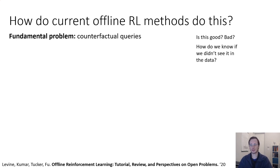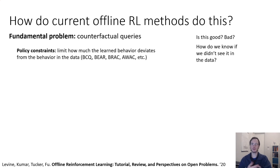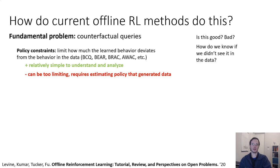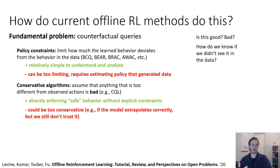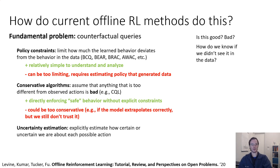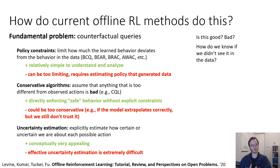At a high level, there are three broad strategies for offline RL. One is policy constraints: limit how much the learned behavior deviates from the behavior in the data. This is simple to understand but can be too limiting and requires estimating the policy that generated the data. Another approach is conservative algorithms: assume that anything too different from observed actions is bad but permit things that are only a little different. A third class of approaches utilizes uncertainty estimation, explicitly estimating how certain or uncertain we are about each possible action. Conceptually this is very appealing, but effective uncertainty estimation is extremely difficult and these methods don't tend to perform well in practice.